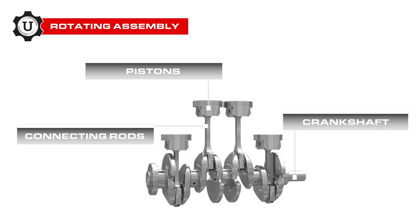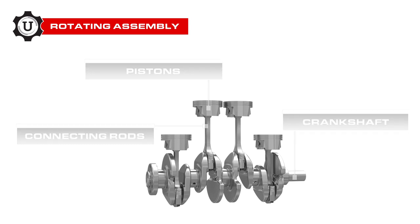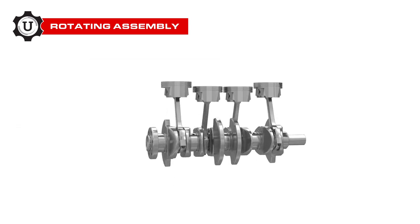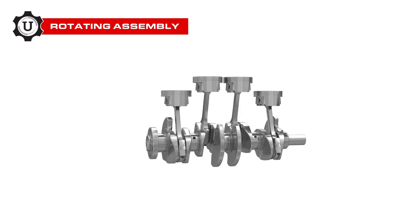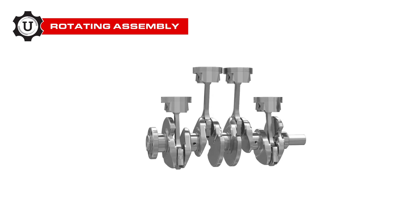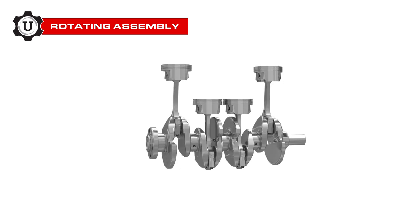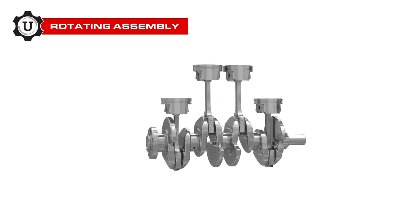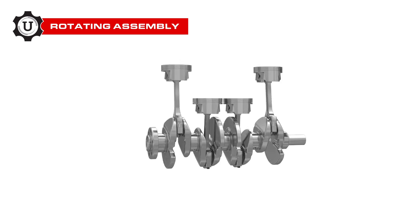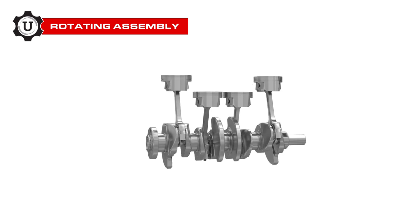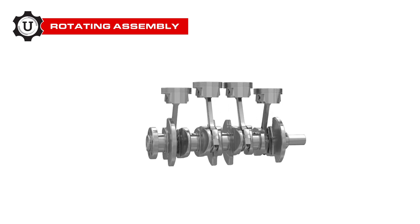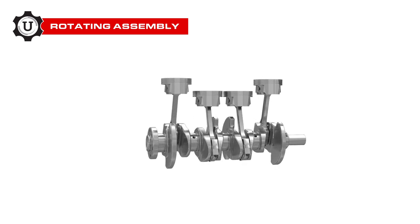The rotating assembly, comprised of the piston, rod, and crankshaft, moves as a unit. The motion starts with cylinder pressure pushing the piston downward. The piston moves the rod. The rod, in turn, moves the crank, spinning the whole rotating assembly and driving the transmission.